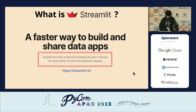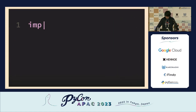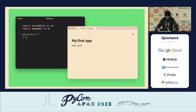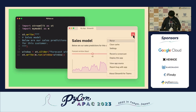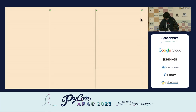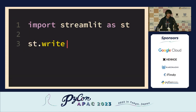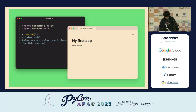Streamlit turns data scripts into shareable web apps in minutes, all in pure Python — no front-end experience required. The only thing you have to do is write Python code without any front-end code, and Streamlit converts that Python script into an interactive and beautiful web application with various kinds of widgets like charts and interactive controls. There are many building blocks you can use to construct interactive web applications just by writing Python code — that is the core benefit of Streamlit, a pure Python web UI framework.